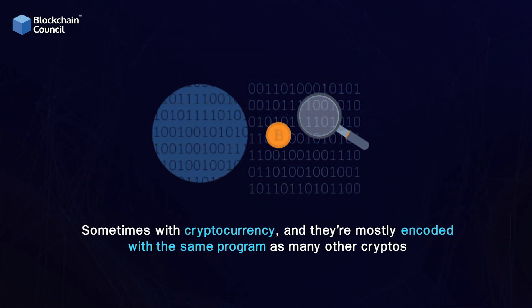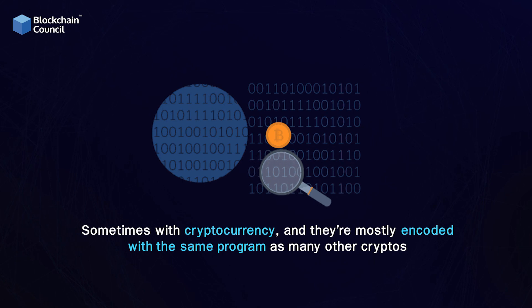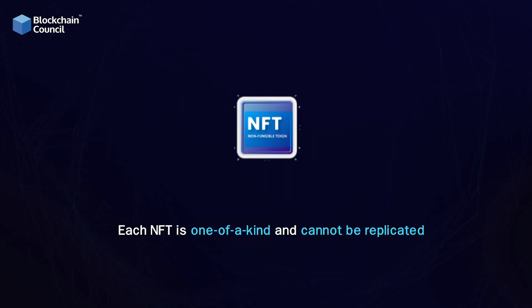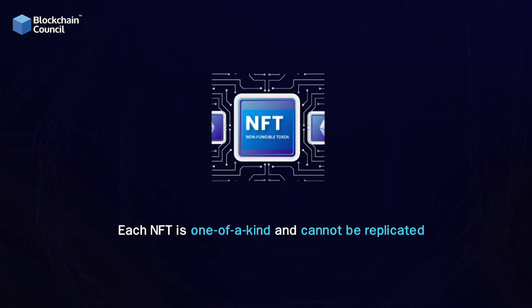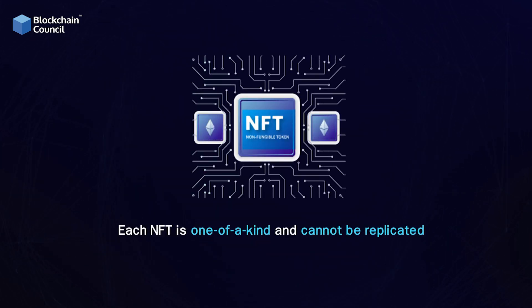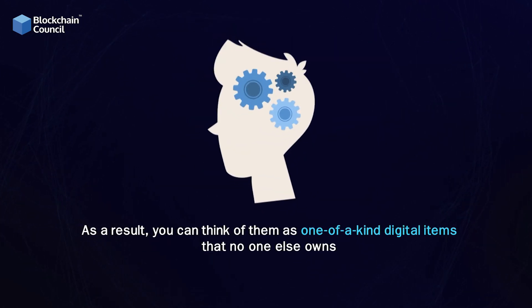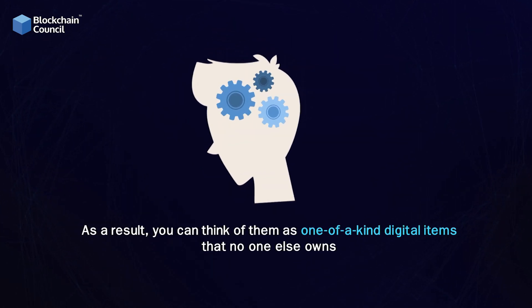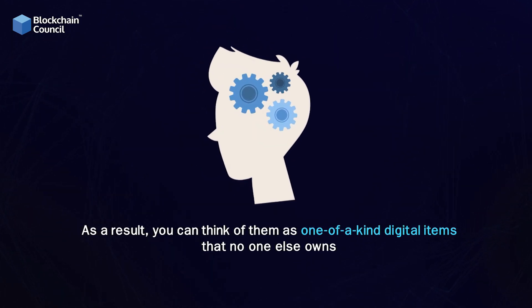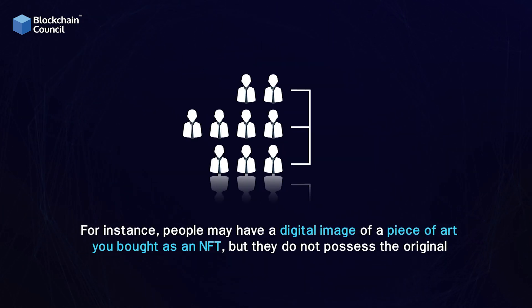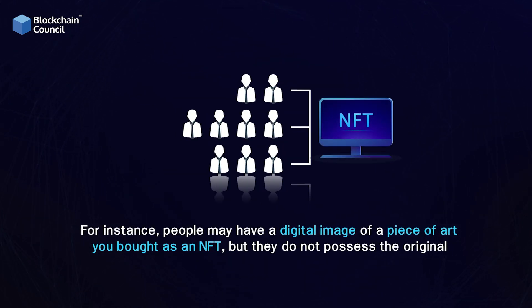NFTs are mostly encoded with the same program as many other cryptos. Each NFT is one of a kind and cannot be replicated. As a result, you can think of them as one-of-a-kind digital items that no one else owns. For instance, people may have a digital image of a piece of art you bought as an NFT, but they do not possess the original.